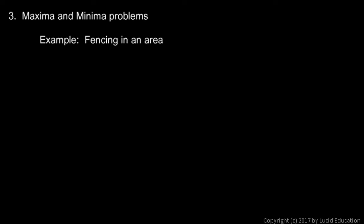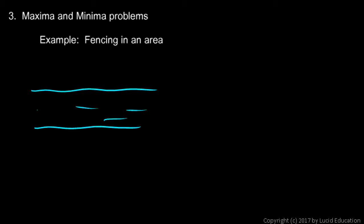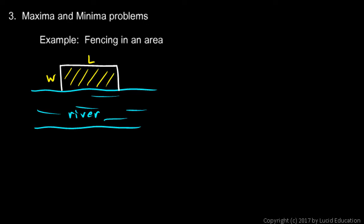There's another class of problems that requires calculus, known as maxima and minima problems, and we'll be solving problems like this in this course. Suppose you have a river and you're going to build a fence to enclose a rectangular field next to the river. You can use one side of the river to save yourself some fence — you only have to fence three sides, because the animals you're keeping in the pasture aren't going to jump in the river. The field has a certain width and a certain length, and therefore a certain area, and you want to get as big an area as you can.